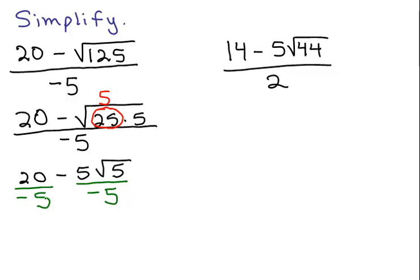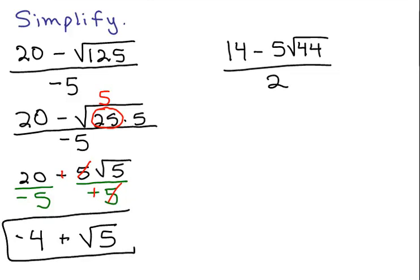So what do I have here? 20 divided by negative 5 is negative 4. And here I have a minus, I have another minus, so that's going to end up being a plus. And notice that the 5s will cancel. So these ended up being pluses. So what I really have here is just plus the square root of 5. And there's our answer for this first one.